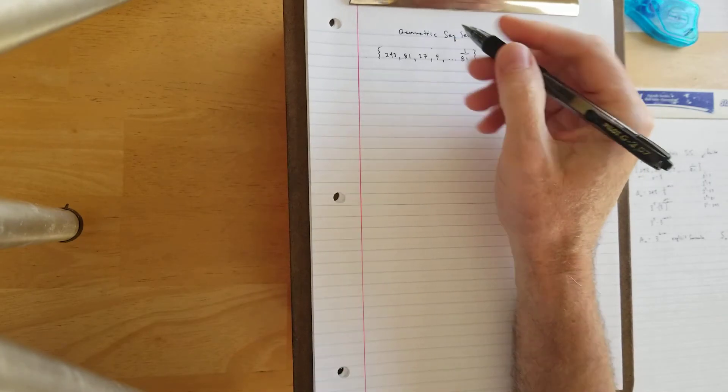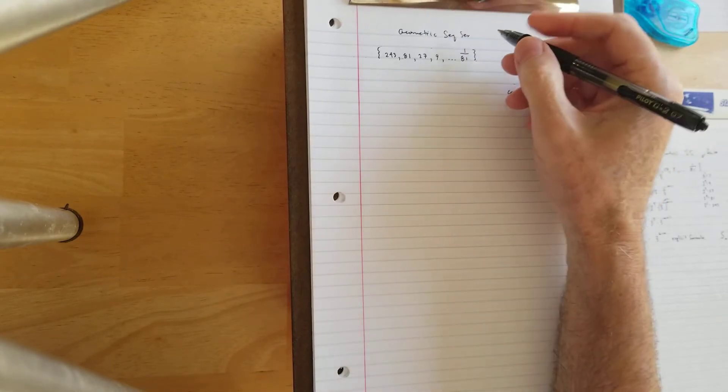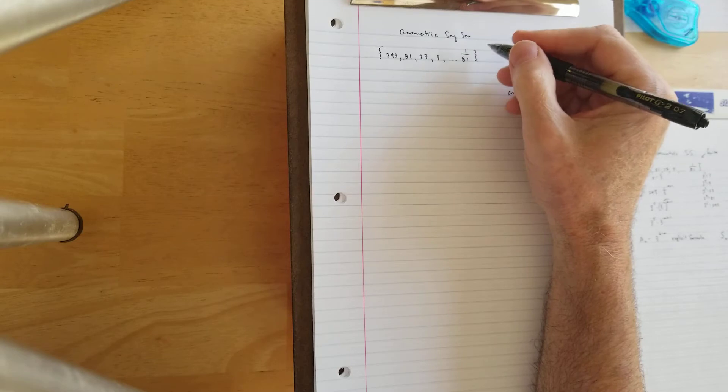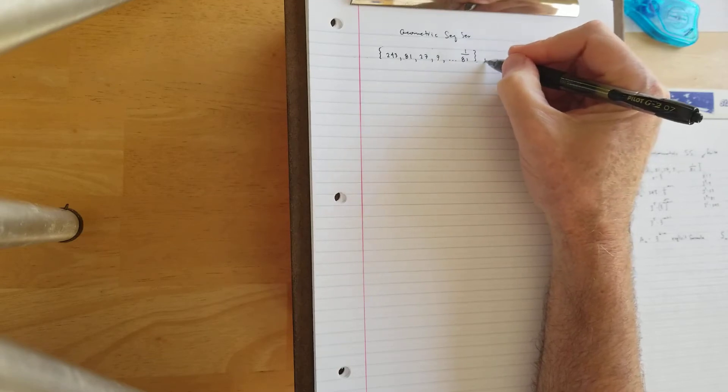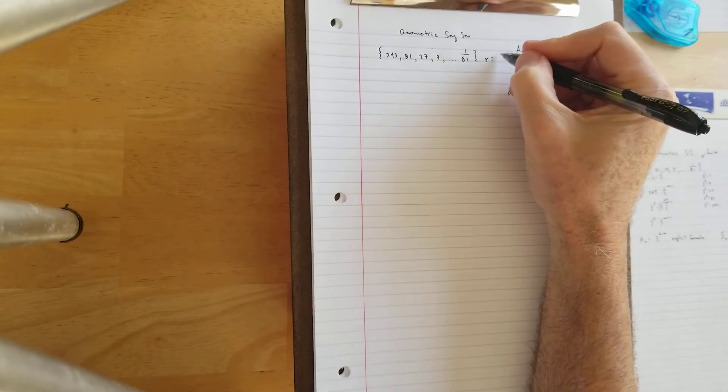Let's take a look at geometric sequences and series. We'll go ahead and start with a little bit of terminology. Since our common change between each term happens to be a common multiple instead of adding or subtracting, that's an R for ratio, and my ratio is dividing by 3 or multiplying by 1 third.